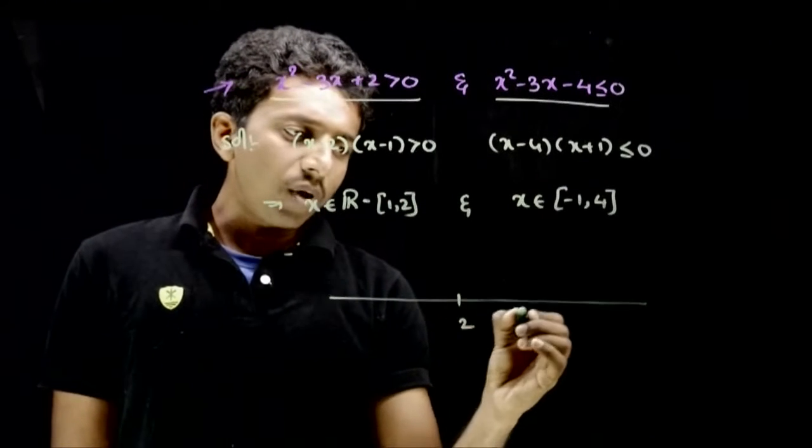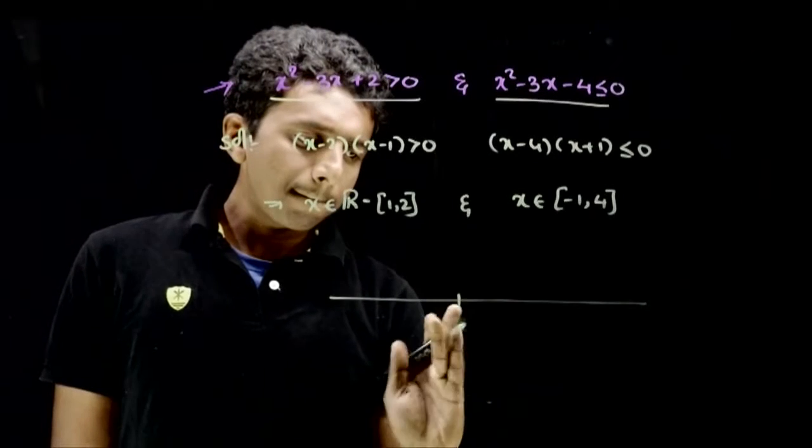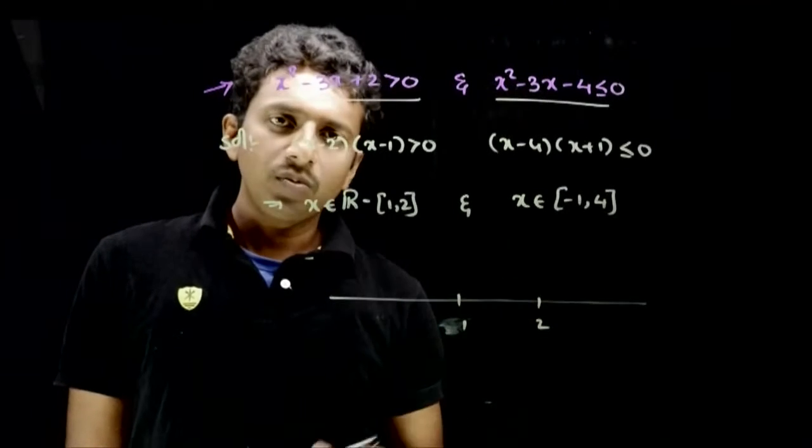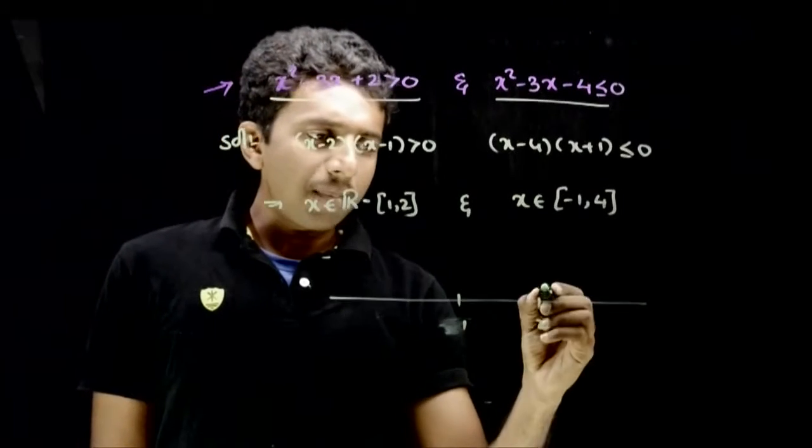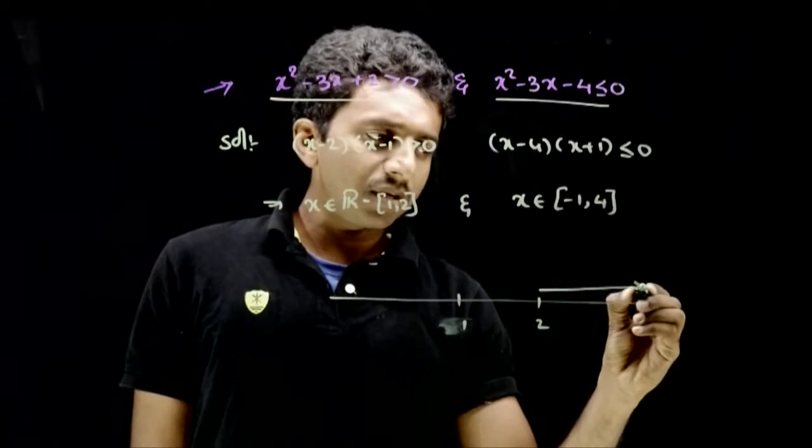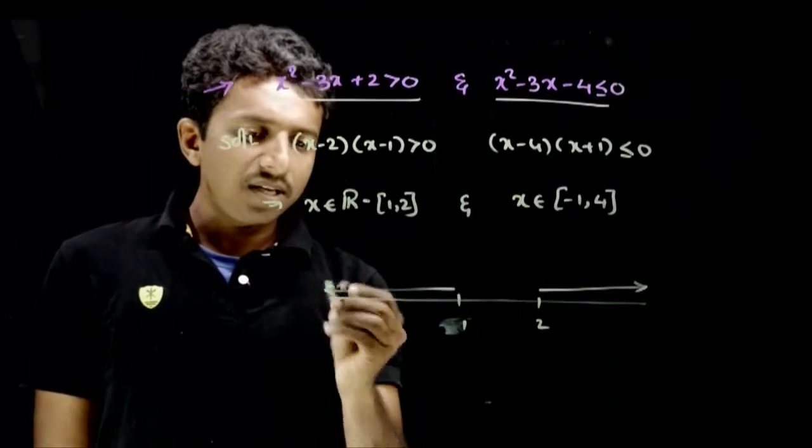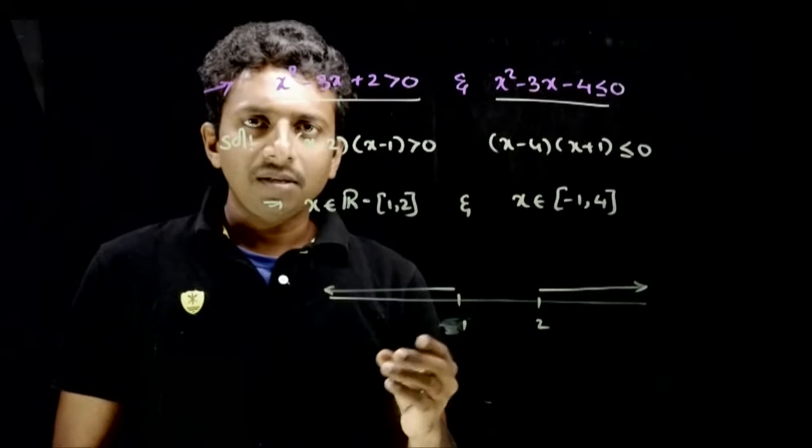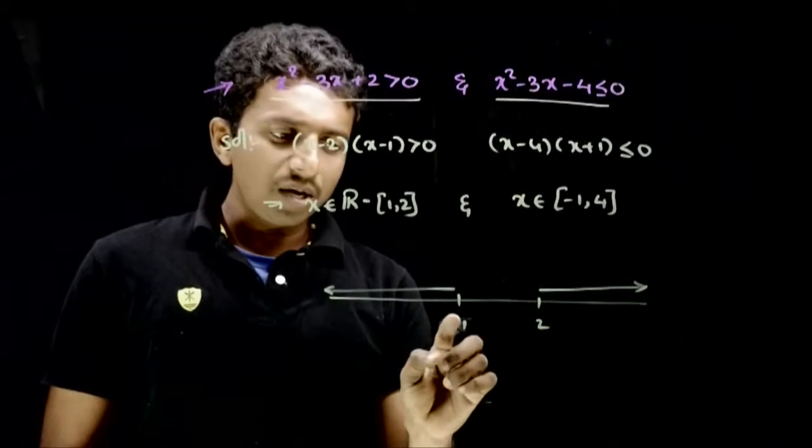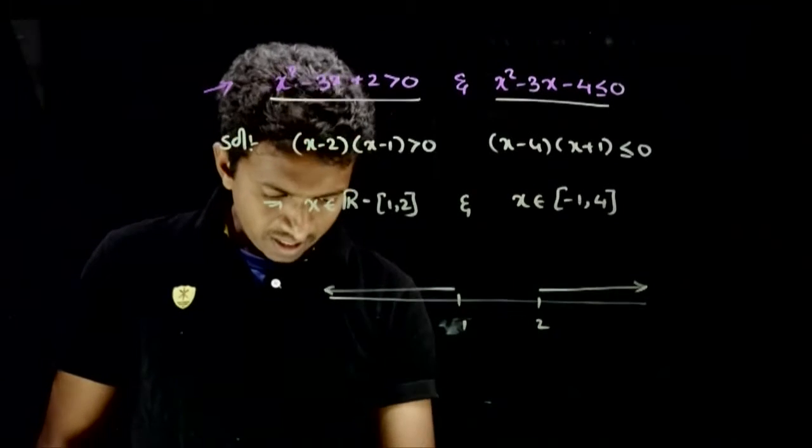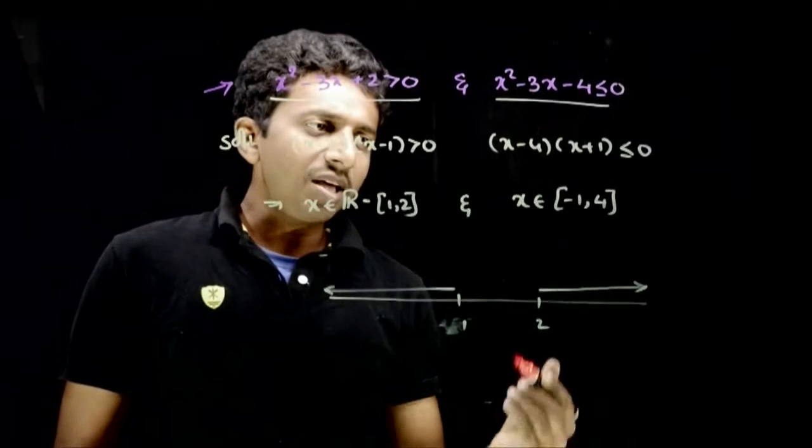The first solution: 1 and 2, excluding them, all other real numbers. So if I draw the solution on a number line, this is how this solution looks like. And let us draw the next solution.